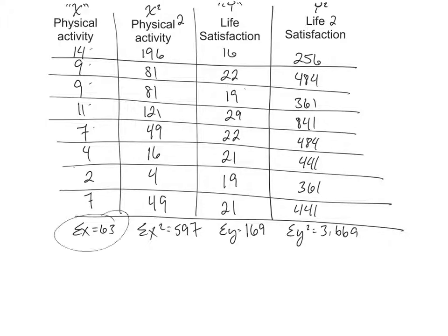And then my sum of all my Y's squared becomes 3,669. So now I have my sum of X, my sum of X squared, my sum of Y, and my sum of Y squared.